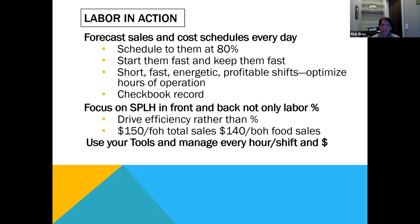We want short, fast, energetic, profitable shifts that optimize our operation, managed by a checkbook — how many dollars did I have and how many did I over- or underspend. Shift focus to sales per labor hour in the front and the back, not just percentages, because as minimum wage goes up those percentages get wacky. We may raise pricing but it may not correlate directly to what labor should be. Drive efficiency rather than percentages.